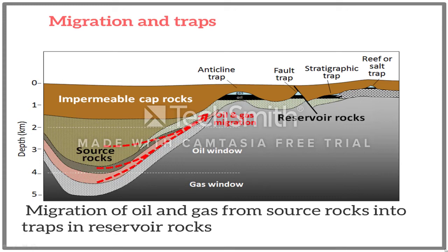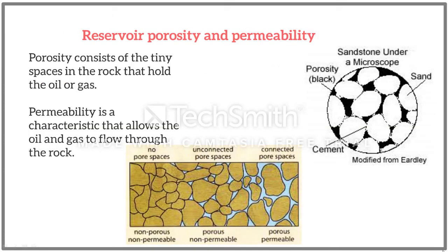Structural trap types include anticline, fold and fault. These traps form as a result of some structural deformation — a bend or deep fold. Stratigraphic trap types include unconformity, lenses and pinch-outs. These traps are formed as a result of the deposition pattern in the sedimentary rock.